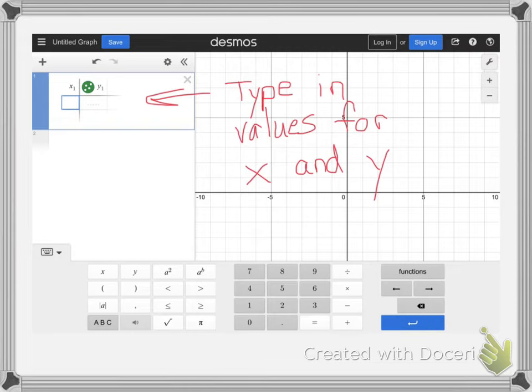What you're now gonna do is type in the values that you have for X and Y when you're looking at the table that you're given on a worksheet or whatever. Type in all your values.